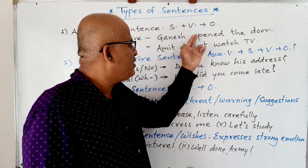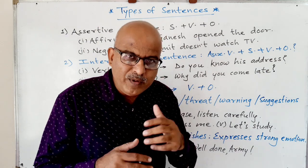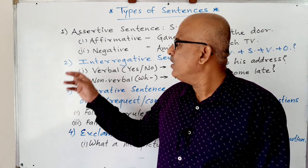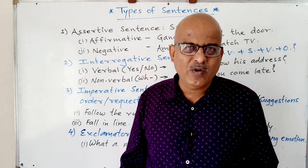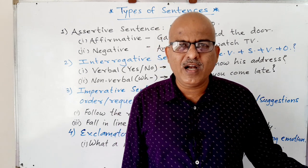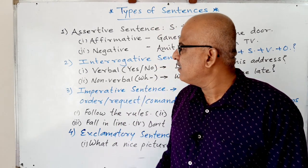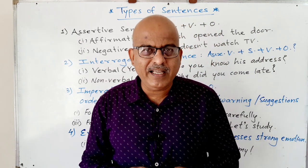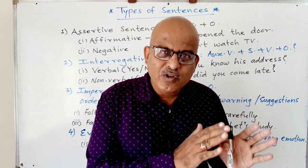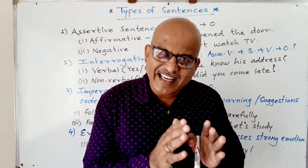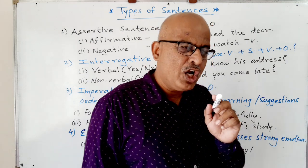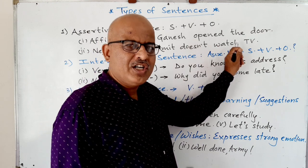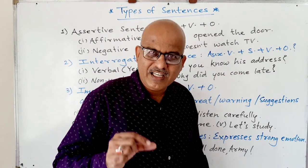An Assertive sentence can be positive or negative. In the negative form, we add 'not' or use a negative auxiliary. For example: 'She doesn't watch TV' is a negative assertive sentence.